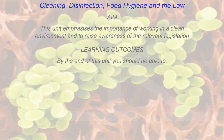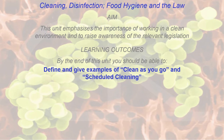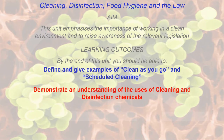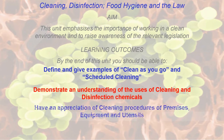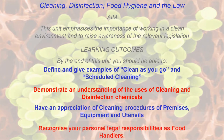By the end of this unit you should be able to define and give examples of clean as you go and shadow cleaning. Demonstrate and understand the uses of cleaning and disinfection chemicals. Have an appreciation of cleaning procedures for premises, equipment, and utensils. And lastly, recognize your personal legal responsibilities as food handlers.